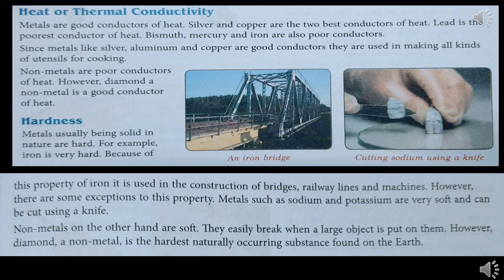Next is hardness. Most metals, being solid, are hard — for example, iron is very hard and is used in construction of bridges, railway lines, machines, and buildings. However, metals such as sodium and potassium are very soft and can be cut using a knife — though they are very reactive so we handle them carefully. Nonmetals on the other hand are soft and break easily when force is applied. However, diamond — a nonmetal — is the hardest naturally occurring substance found on Earth.